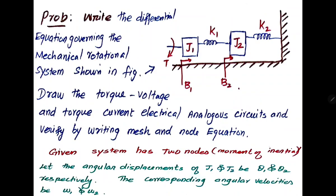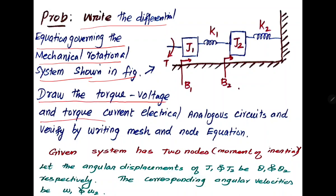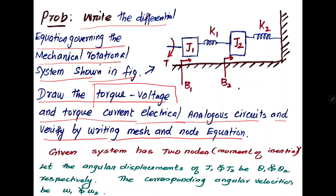Based on this, we are going to solve one problem. The problem states: write the differential equation governing the mechanical rotational system shown in the figure, then draw the torque-voltage and torque-current electrical analogous circuits and verify by writing mesh and node equations. In this session, we are going to solve only the torque-voltage analogy.